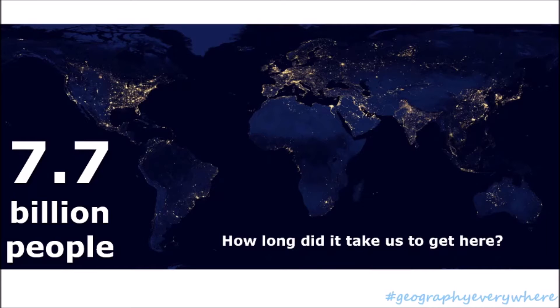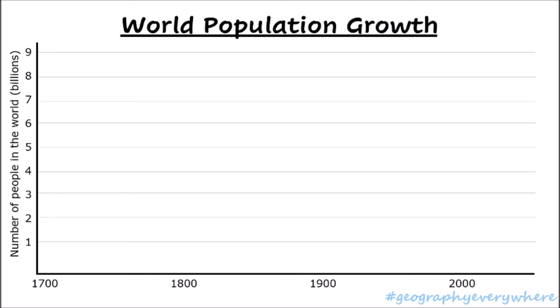How long did it take us to get here? Let's look at this graph of world population growth, starting from the 1700s. In the far past, the population grew very, very slowly. People had many children — there was a high birth rate — but there was also a very high death rate. So the population didn't really grow that much. In the year 1804, the world population was at exactly 1 billion. At this time, the population was still growing quite slowly.